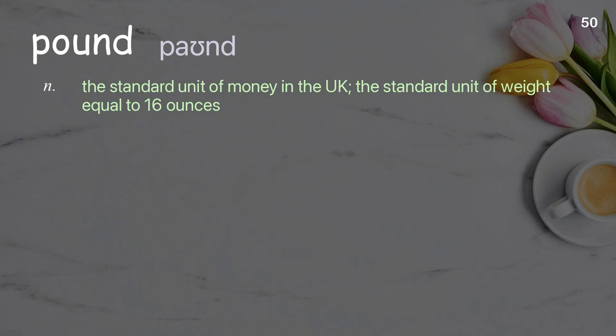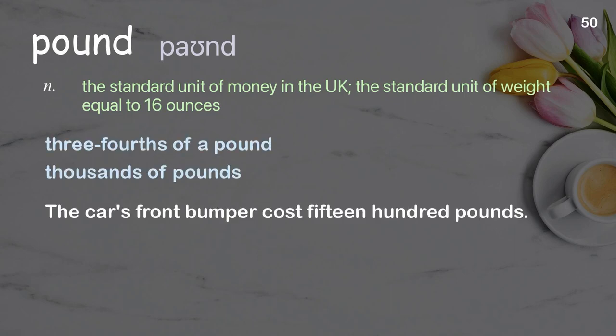Pound: the standard unit of money in the UK; the standard unit of weight equal to 16 ounces. Examples: three-fourths of a pound, thousands of pounds. The car's front bumper cost 1,500 pounds.